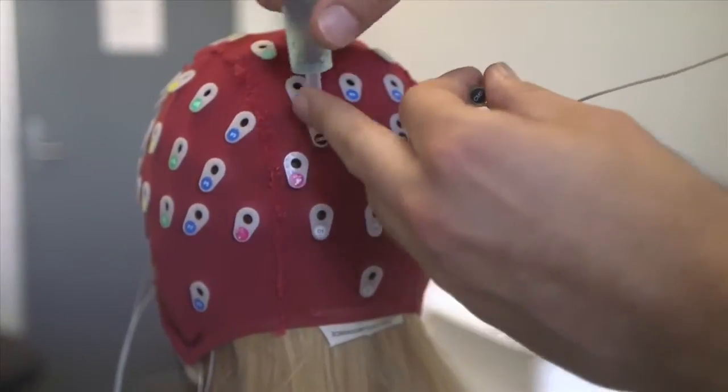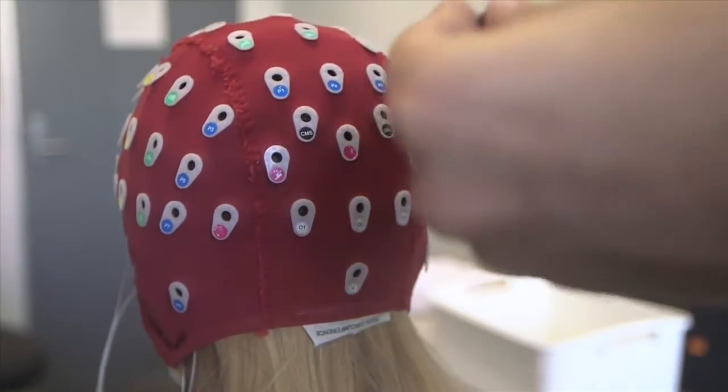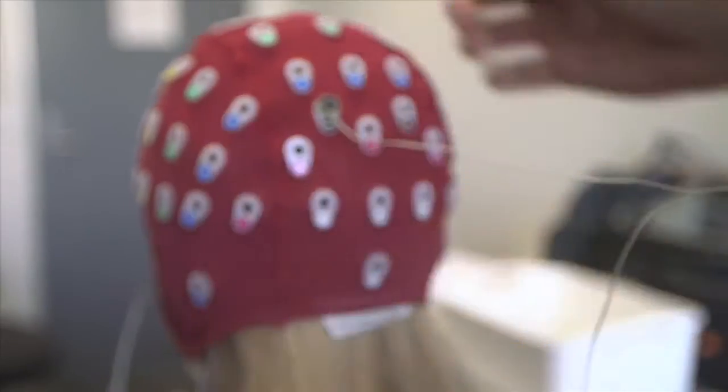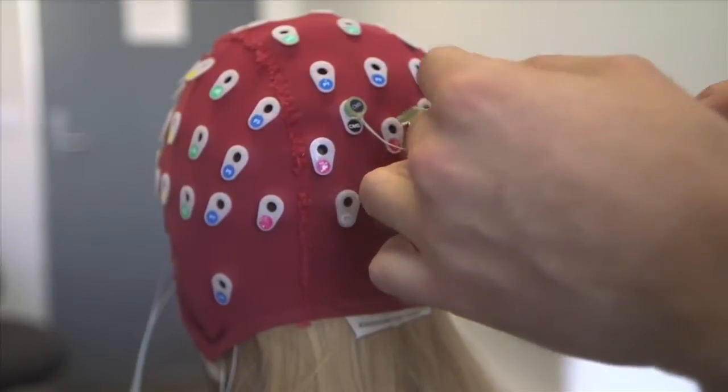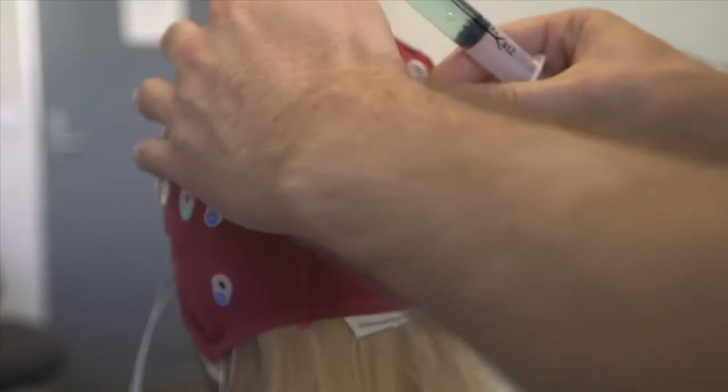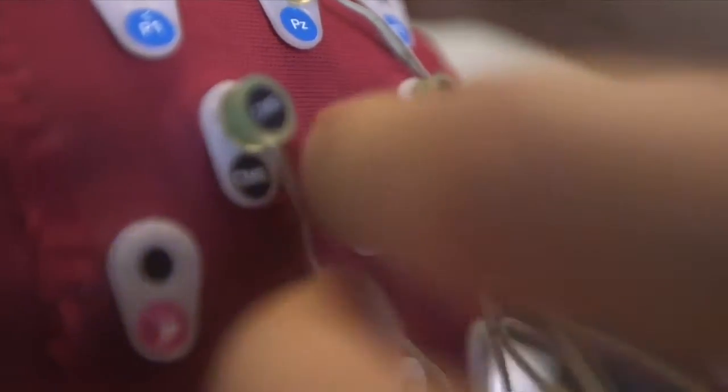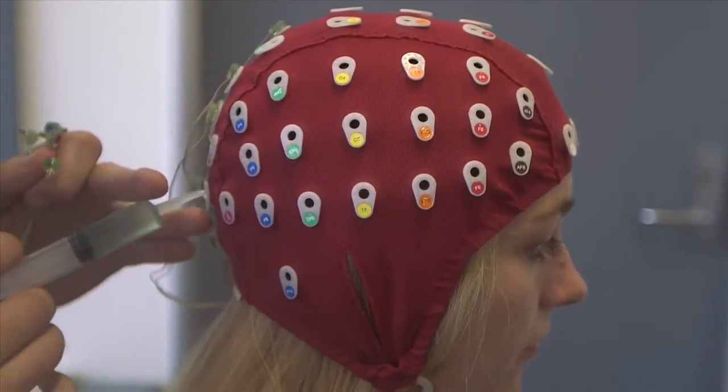You are now ready to attach the electrodes. Do one side at a time, start at the back of the head, and attach the electrodes in the same order as they are ordered on the cable to minimize tangling. Carefully poke the tip of the syringe all the way to the participant's scalp, and gently move it around to push hair out of the way. Start to administer gel as you pull the syringe out to make sure that there's no empty gap between the scalp and the electrode. Then repeat this 64 times until the entire cap is completed.